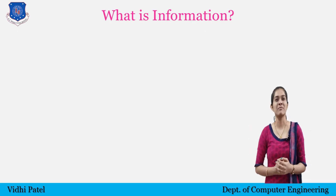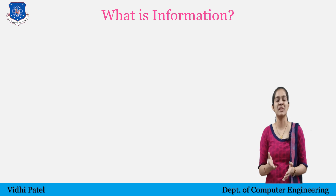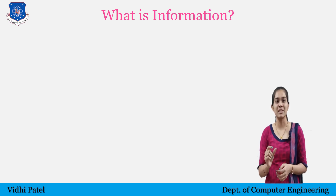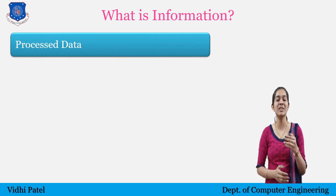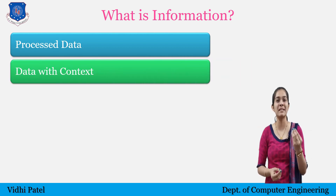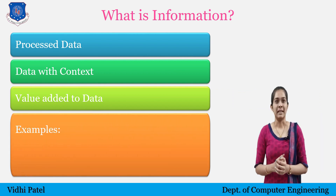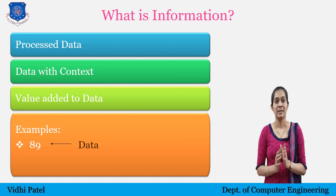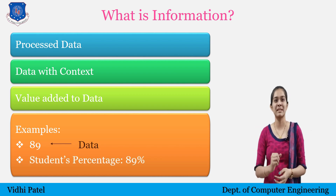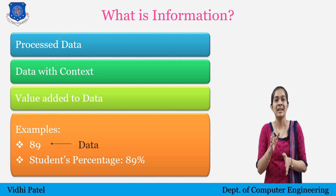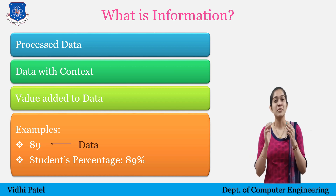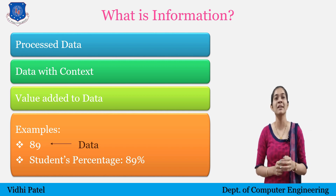What is information? Many people have confusion regarding data and information. Data and information are very different terms. Information means processed data — data with context, meaning it has some meaning, or it is summarized, organized, or analyzed data. For example, '89' is data, but '89%' clarifies that it has meaning — it gives information that a student has obtained 89 percent. There is a huge difference between data and information.